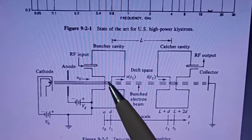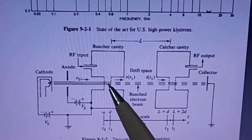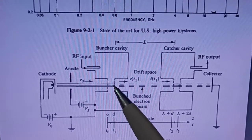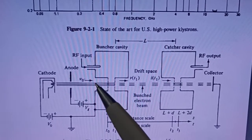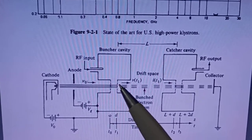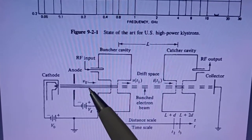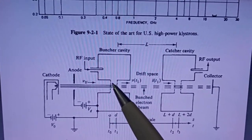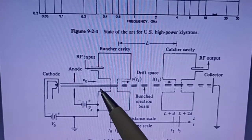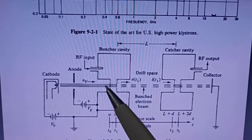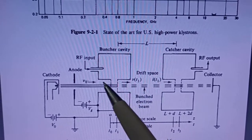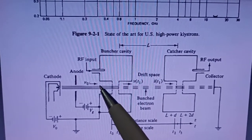After that, the electrons enter into the buncher cavity. The RF signal is oscillating inside the cavity. Whenever these electrons touch the RF signal at positive voltage, the velocity of the electrons will be increased. If the electrons touch the gap when the RF signal voltage is minimum, the velocity of the electrons will decrease and they travel with low velocity. That is nothing but v0.